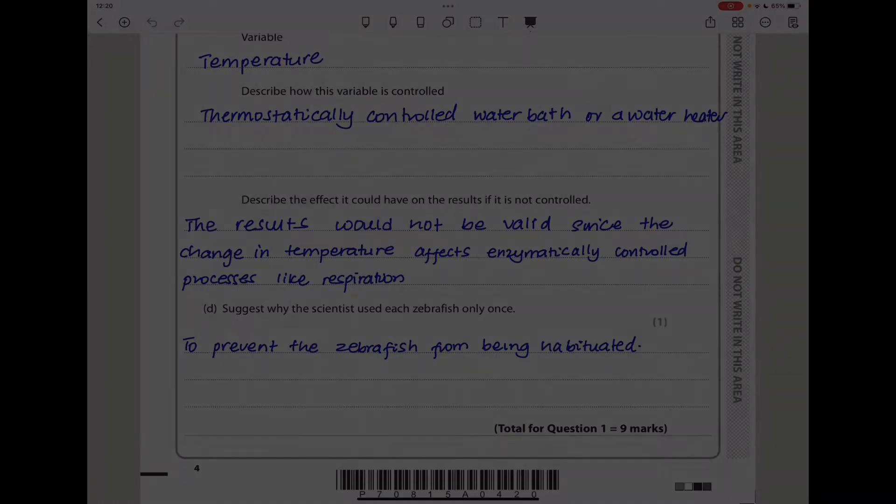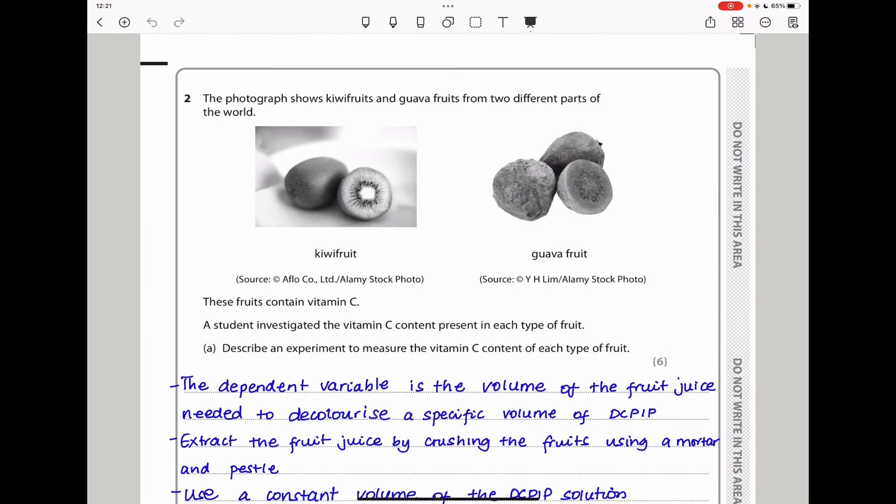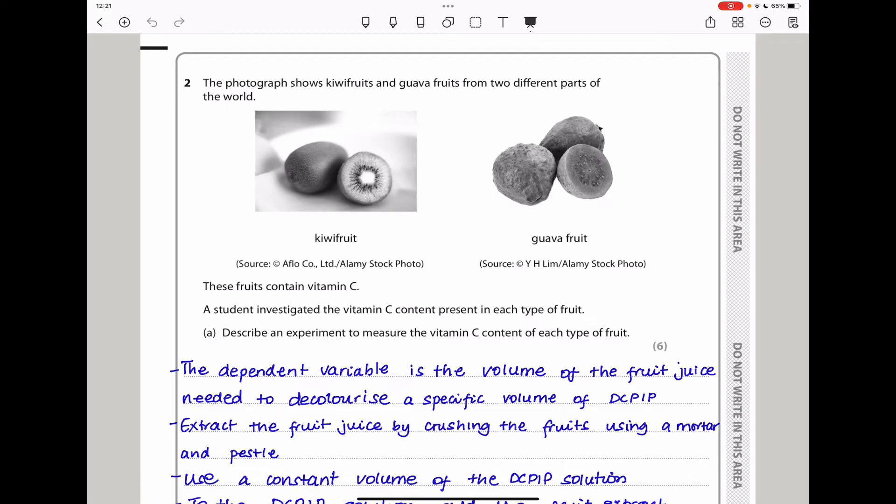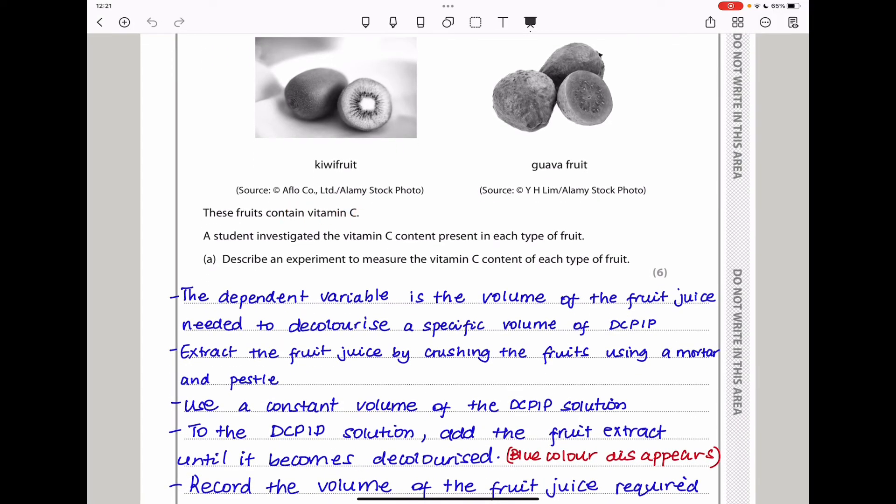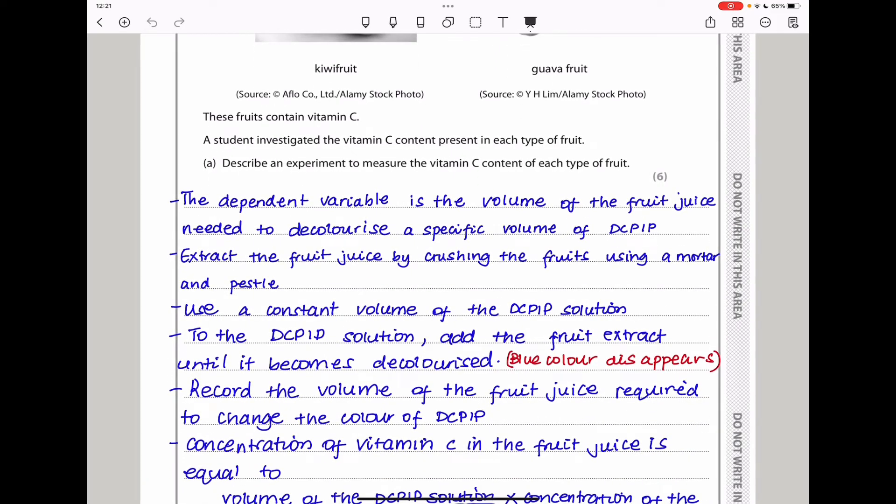Question two. The photograph shows kiwi fruit and guava fruits from two different parts of the world. This is a kiwi and that is a guava. These fruits contain vitamin C. A student investigated the vitamin C content present in each type of fruit. Describe an experiment to measure the vitamin C content of each type of fruit. To measure vitamin C, we need the DCPIP solution. You need to begin by telling the examiner which one is the dependent variable.